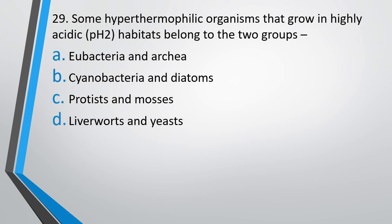Question number 29. Some hyperthermophilic organisms that grow in highly acidic pH belong to two groups. Option A: Eubacteria and Archaea. Option B: Cyanobacteria and diatoms. Option C: Protists and amoeba. Option D: Liverworts and yeasts. Correct answer is option A — Eubacteria and Archaea.